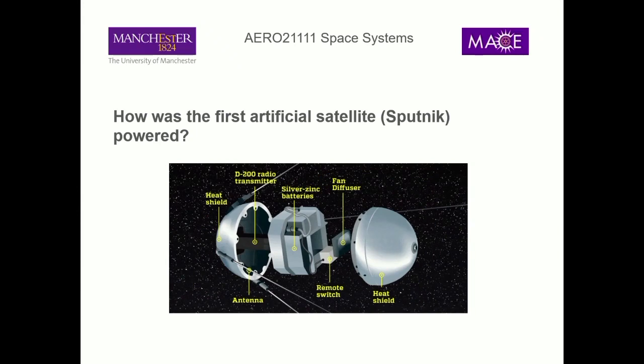Sputnik was initially supposed to power for a couple of days, but it actually worked for about 22 days. They basically over-specified it, which is pretty much what you do for everything in space — you over-spec it because you have to be confident it's going to work and that you've got the systems required.